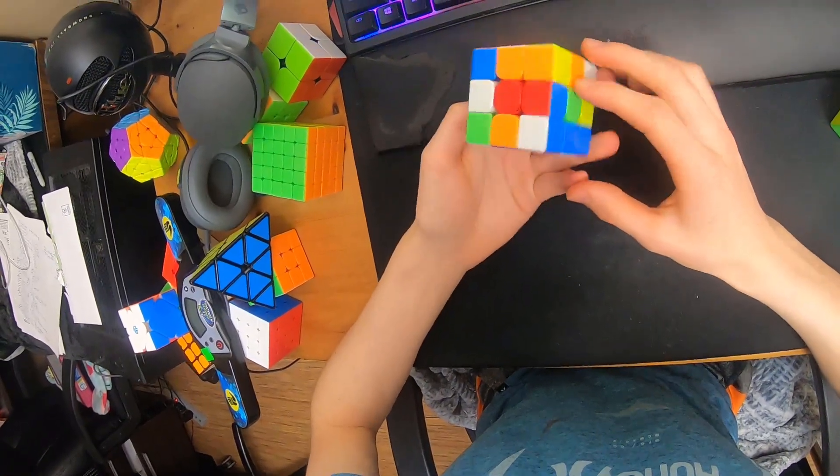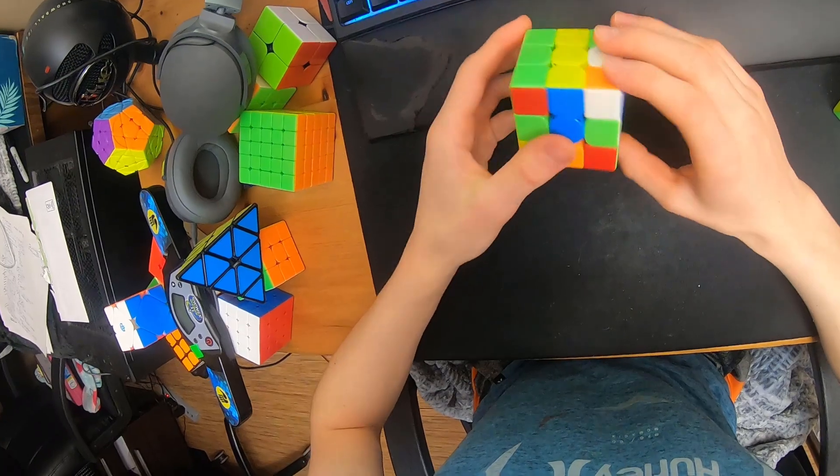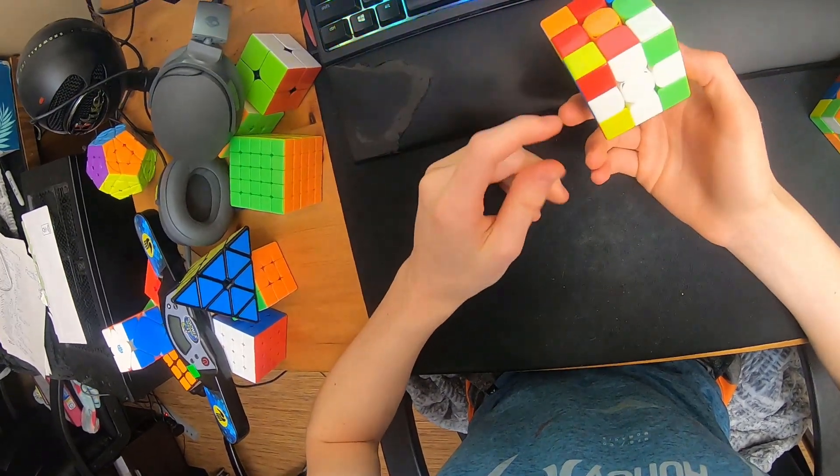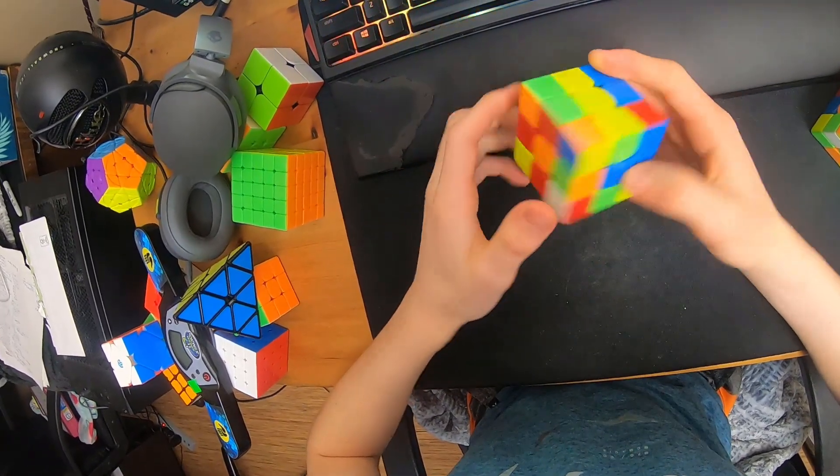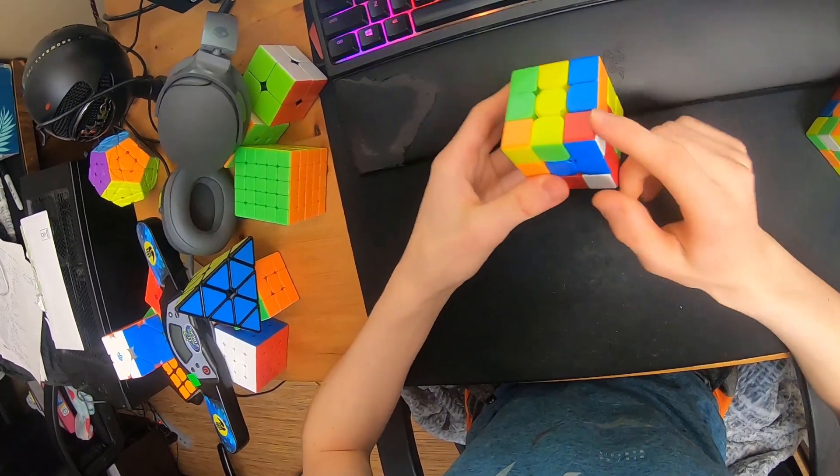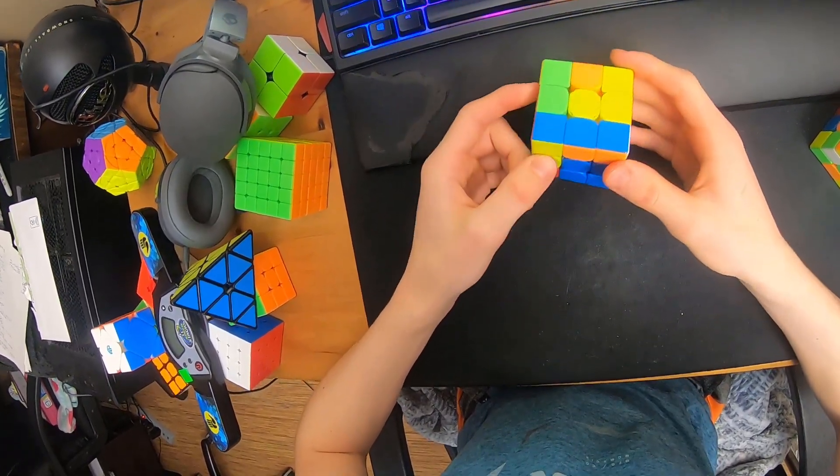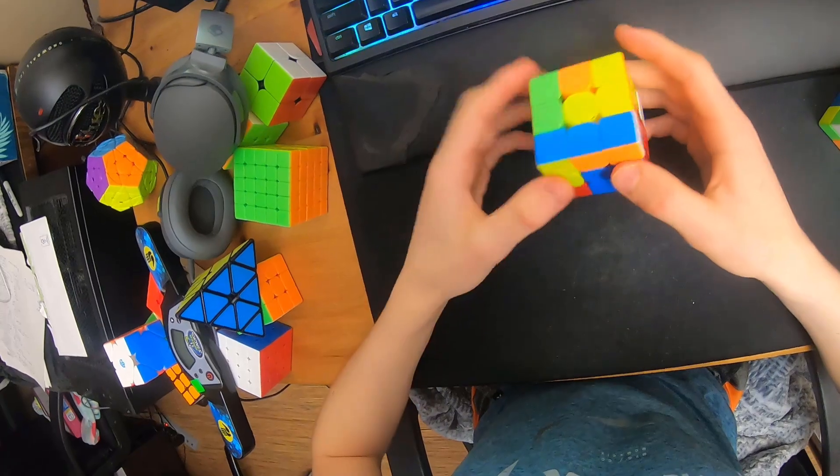So this first one, I got a really easy x-cross. If I do f r2, we have all the white cross, but a d2, and I can do d, insert this corner, a d to finish the x-cross.